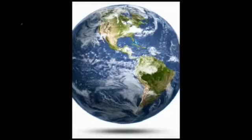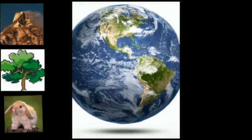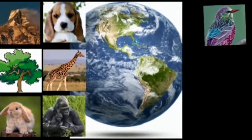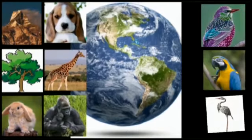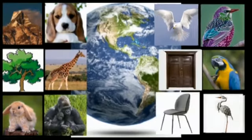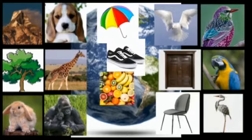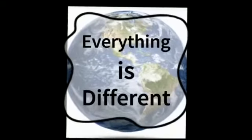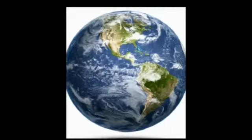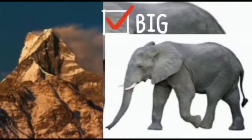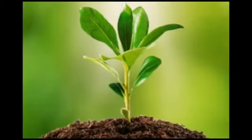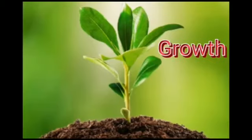There are so many things around us. Our earth has mountains, trees, and different kinds of animals and birds. We have around us different kinds of things which we use, we eat, or we keep things in. But all the things on earth are not alike. Elephants are as big as mountains but they can move.